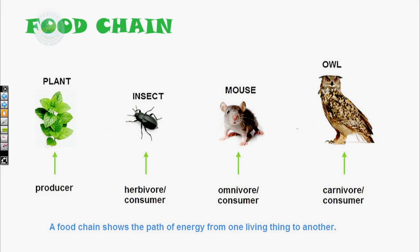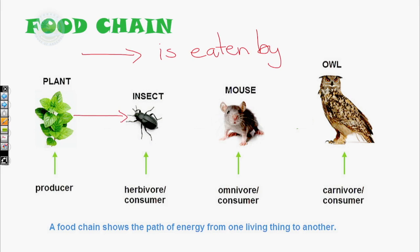So, food chains. A food chain shows the path of energy from one living organism to the next. The arrow denotes 'is eaten by,' and you use the arrowheads to determine what is doing the eating. So the insect is eating the plant, the mouse is eating the insect, and the owl is eating the mouse.